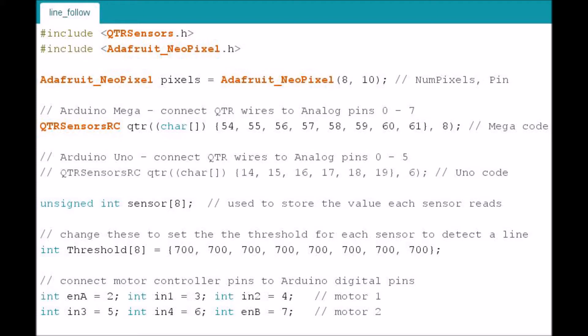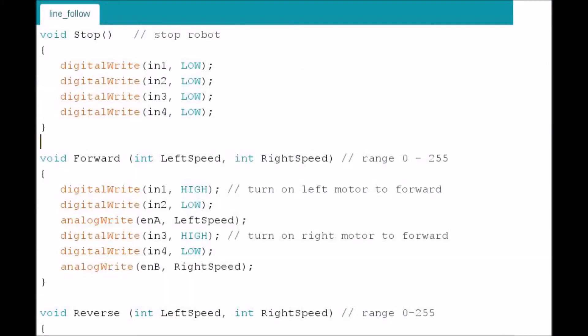Then underneath that, we connect our motor controller to the pins. Then I've created some functions for you to use. One is called stop. Just call that function, it will stop the motors. The next one is called forward. And that one takes two parameters. Each one ranges from zero to 255. And that will be the speed of the left motor and the right motor to move forward. And you can do the same thing with reverse if you want to.